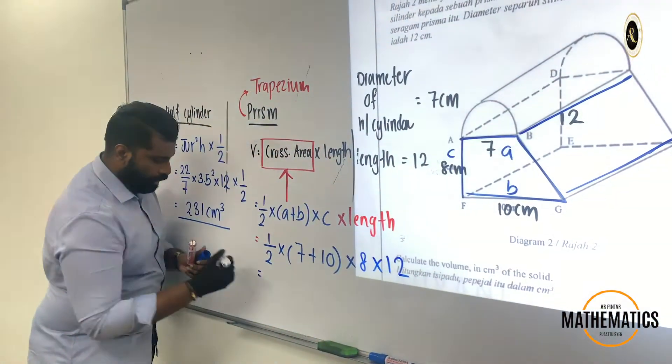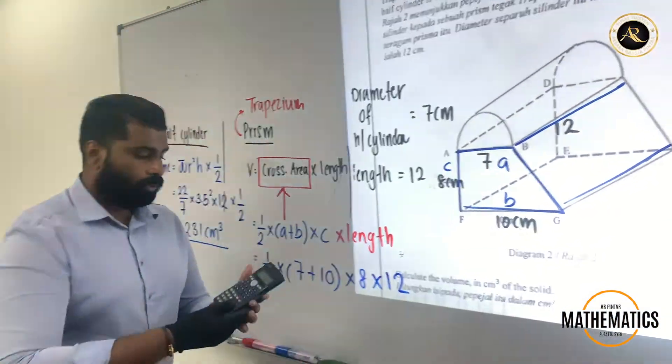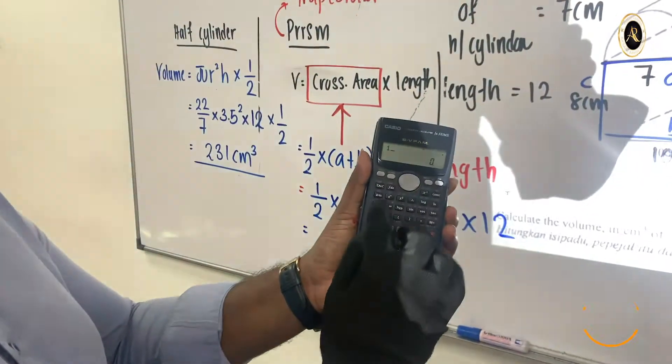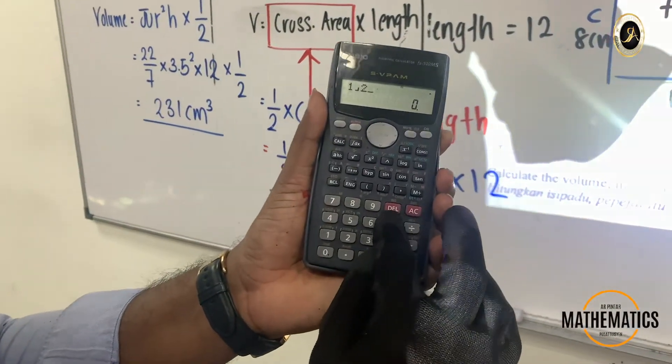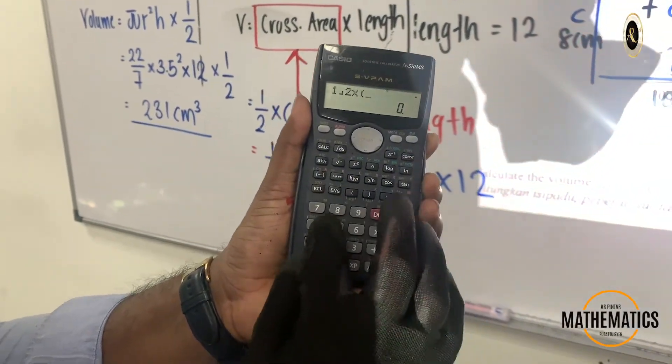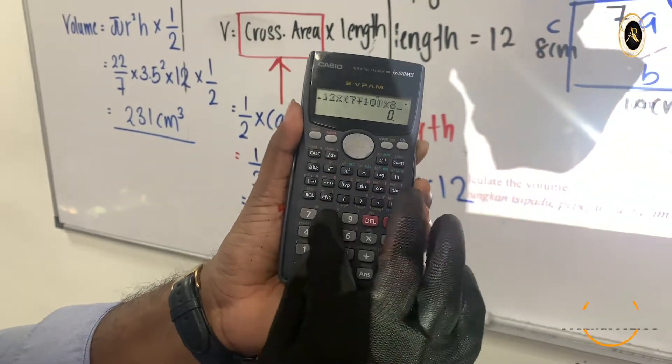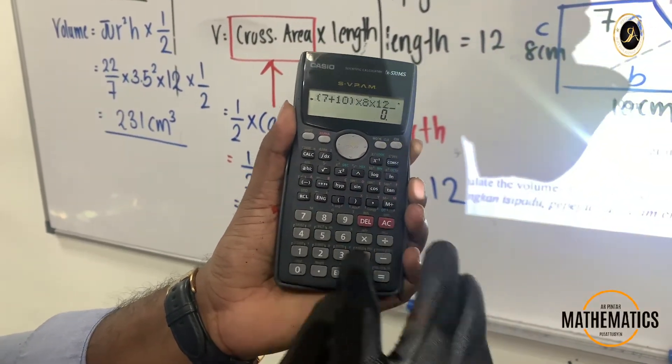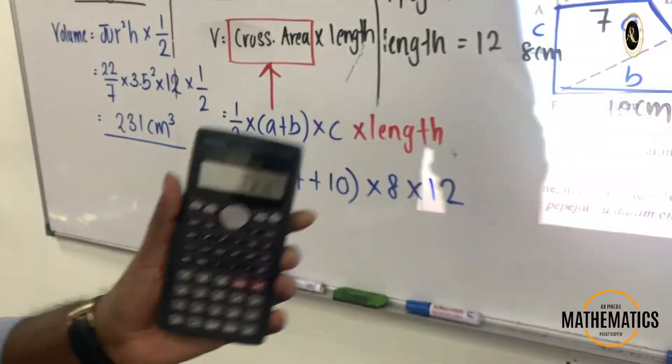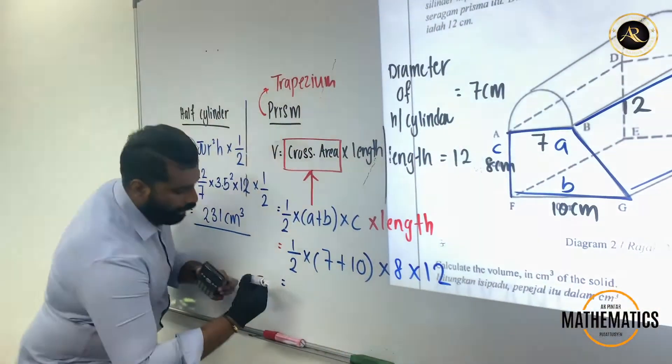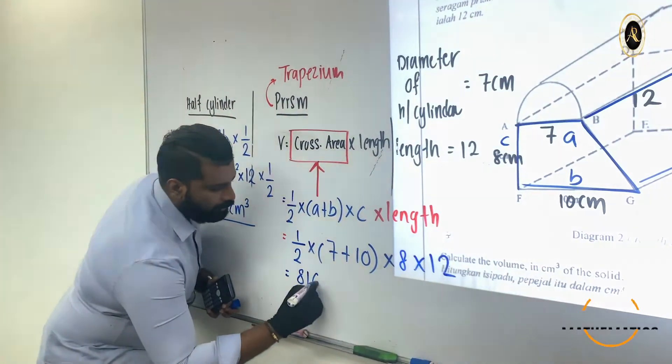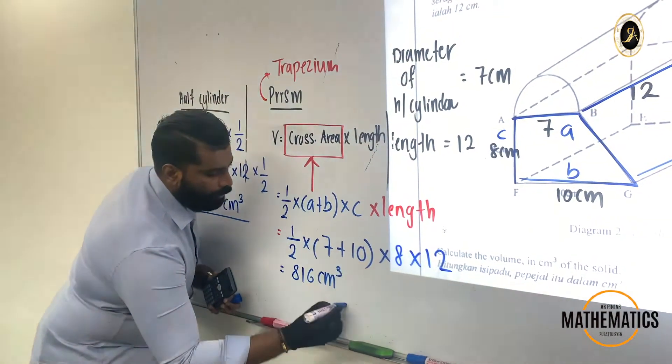So we are going to calculate here. You can press your calculator: 1 over 2 times bracket 7 plus 10 close bracket times 8 times 12. So you will get 816. 816 cm cube.